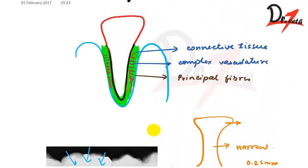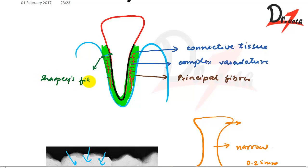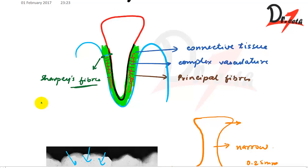The principal fibers run from the root to the bone. The terminal portions of the principal fibers that are inserted into the cementum and the bone are called Sharpey's fibers. These ends tend to calcify.